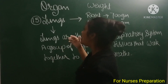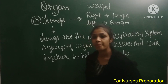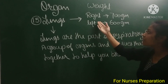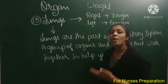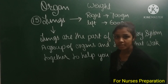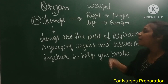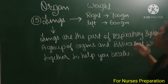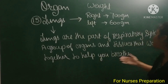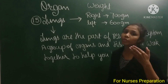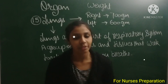Next organ is the lungs. Both lungs vary in weight: the right lung consists of 700 grams, whereas the left lung consists of 600 grams. The lungs are part of the respiratory system — a group of organs and tissues that work together to help you breathe.